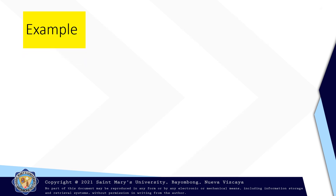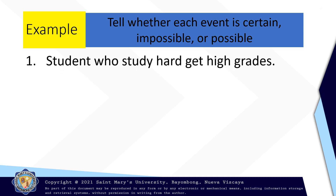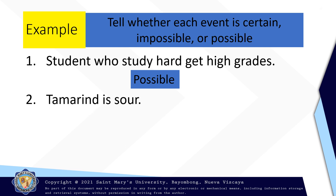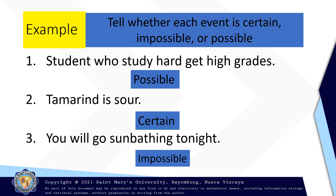Let's have an example. The direction is: tell whether each event is certain, impossible, or possible. Number one: a student who studies hard gets high grades. That is possible. Number two: tamarind is sour. Your answer is correct — it's certain. And we have number three: you will go sunbathing tonight. And your answer is impossible. And that is correct.